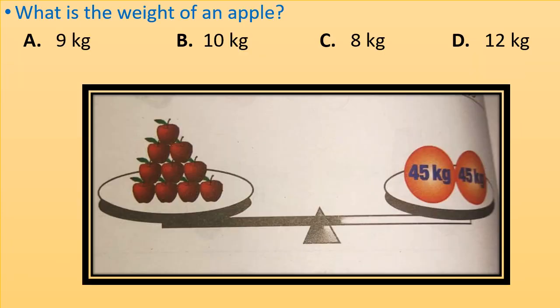What is the weight of an apple? See the figure. There are 10 apples which are equals to 2 balls of 45 kg each. So weight of 10 apples equals to 45 plus 45 equals to 90 kg. Now we can find out the value of 1 apple.